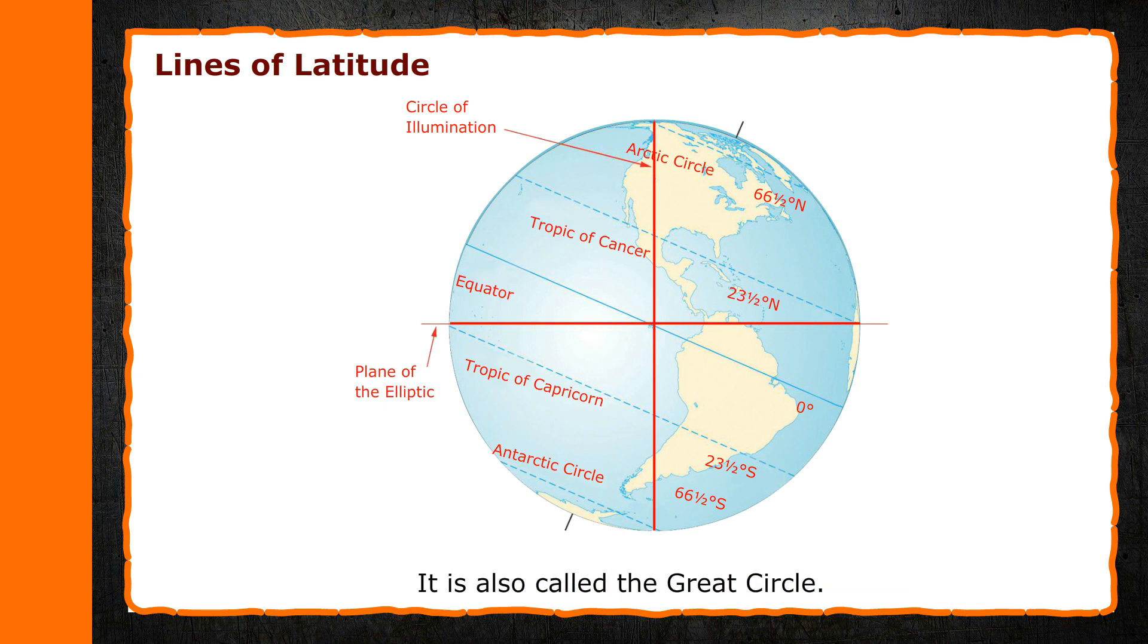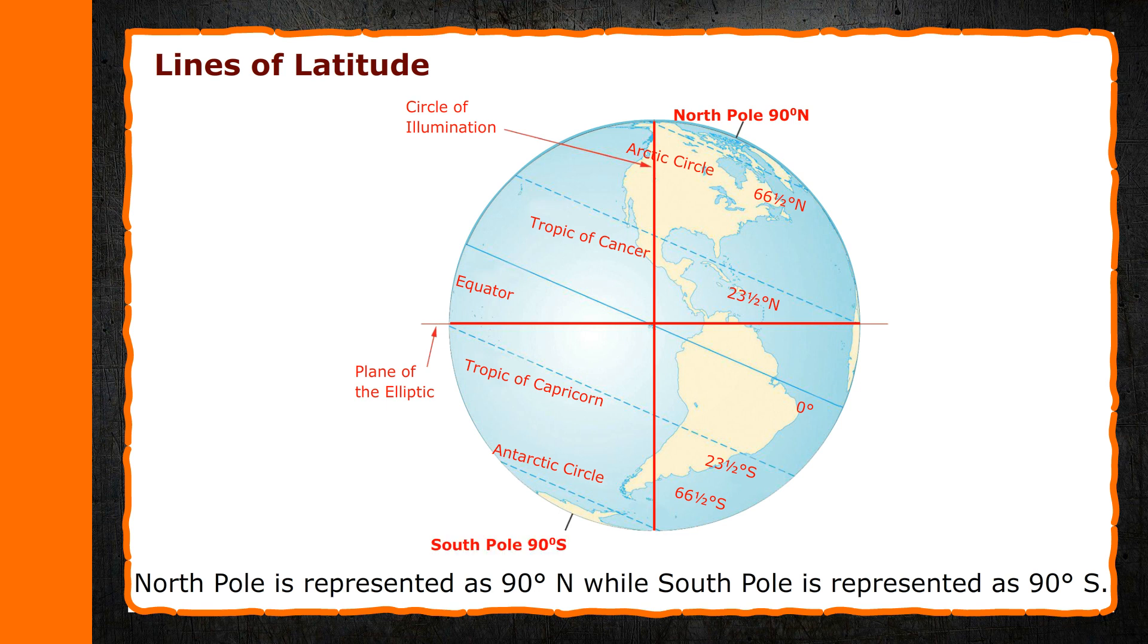The North Pole is represented as 90 degrees north, while the South Pole is represented as 90 degrees south.